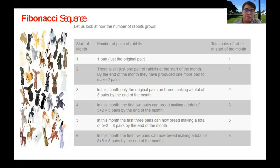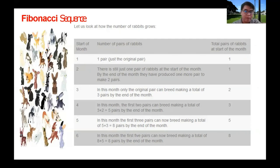By the end of the first month, the original pair produces one more pair, making two pairs. In the third month, only the original pair can breed, making a total of three pairs. In the fourth month, the first two pairs can breed, making three plus two, which equals five pairs. In the fifth month, the first three pairs can breed, making five plus three, which equals eight pairs. This develops the Fibonacci sequence.